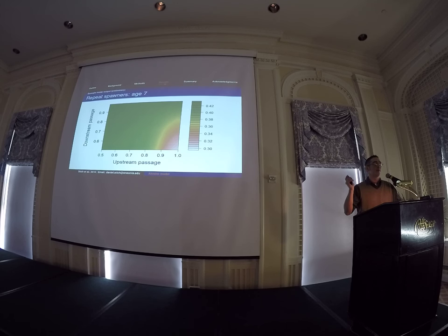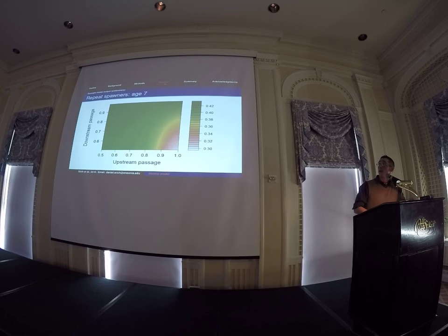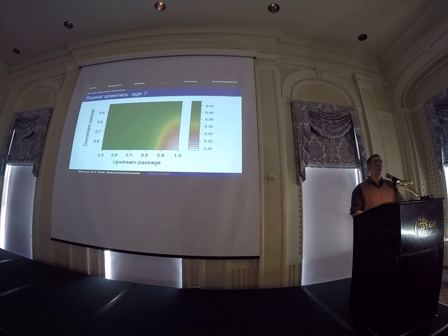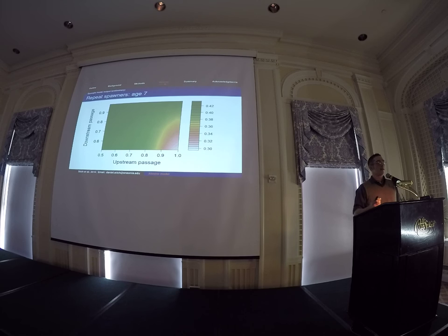Another way we can look at this is to look at the proportion of repeat spawners — the number of fish that come back to spawn every year. After we initially seed the model, we're actually deriving this empirically from the simulations, so these are outputs, not inputs. On the x-axis is upstream passage, on the y-axis is downstream passage. This is the opposite trend — that's because passing dams hurts these fish unless downstream passage is perfect. Any time they incur percent mortality moving downstream through the river, it decreases the probability of being a repeat spawner.